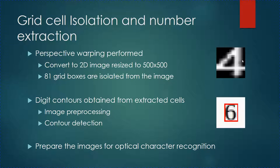From the extracted cell blocks, digit contours are obtained using a similar contour detection technique — you can see an example image of the number six with a red rectangle enclosure. Before performing character recognition, the image is again preprocessed: converted to grayscale, a Gaussian blur is applied, followed by histogram equalization, and finally the image is converted to a binary image using adaptive thresholding — the same preprocessing pipeline as before.